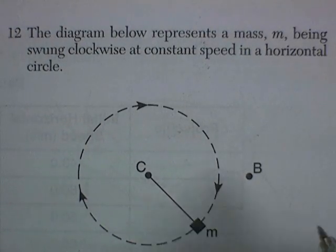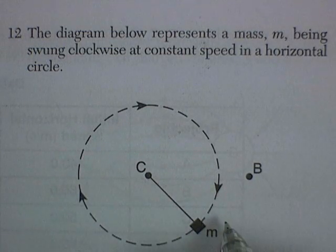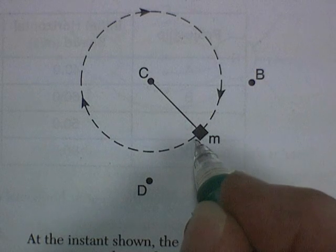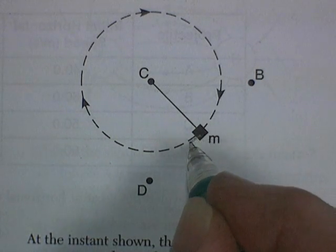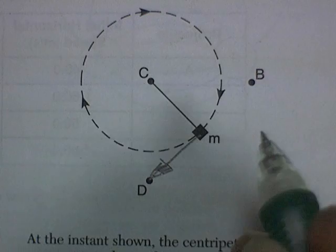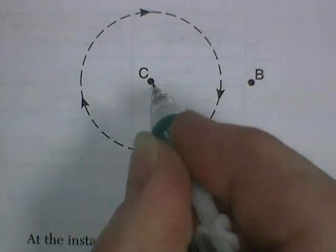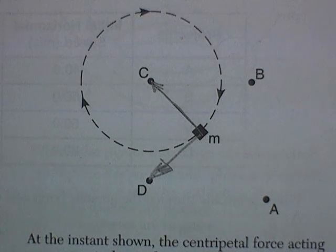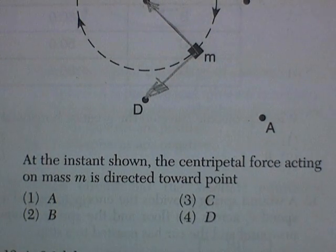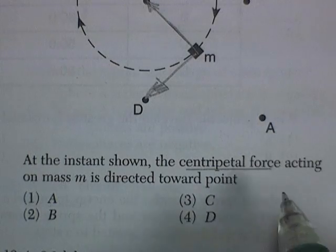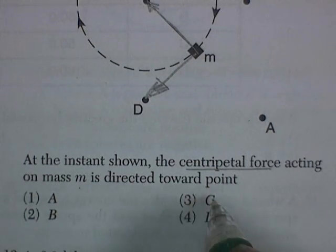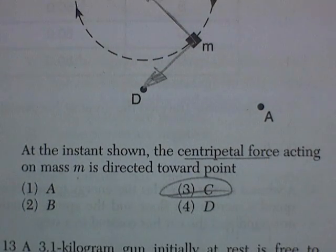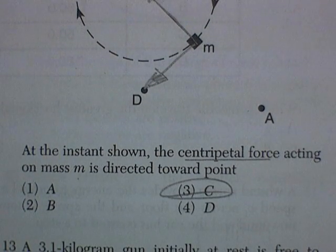Question 12. A mass being swung clockwise at a constant speed. If we look at it, there's two things that can be happening. We can have instantaneous velocity, which is tangential to the path, or we can have centripetal acceleration, which by definition means center seeking, or towards the center of the path. At the instance shown, the centripetal force acting on the mass M is directed towards point C. Centripetal center seeking towards the center.